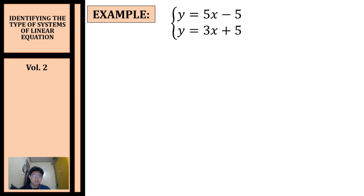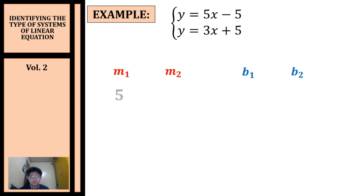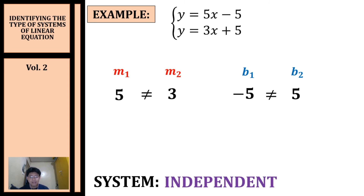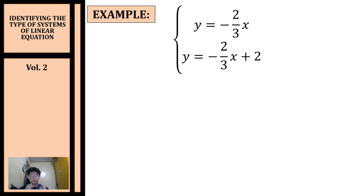Next example: y equals 5x minus 5 and y equals 3x plus 5. Since this is written in slope-intercept form, we compare slopes and y-intercepts. The slope of the first equation is 5, and the slope of the second equation is 3. The y-intercept of the first is negative 5, and the second is 5. The slopes are not equal, and the intercepts are also not equal. Therefore, the system is independent — we expect an intersecting line with one solution.